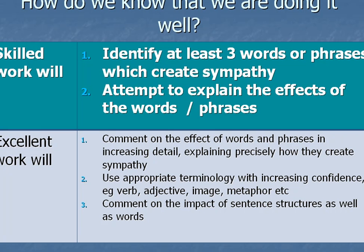It's really important that we understand, when we're doing a task like this, how we know if we're doing it well. So as usual in English, we've split up the success criteria into skilled and excellent. For skilled work, if you show that you've got the ability to work at a skilled level, you'll firstly identify at least three words or phrases which create sympathy. It doesn't really matter if you don't understand the whole text — that's not what we're focusing on — but you'll find some words and phrases that create sympathy and make an attempt to explain the effects of these words and phrases.